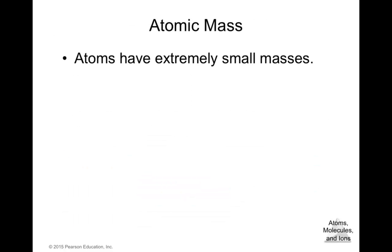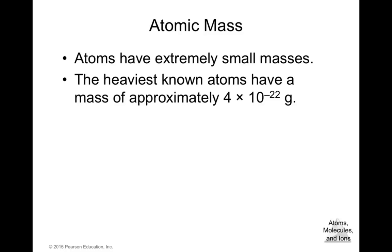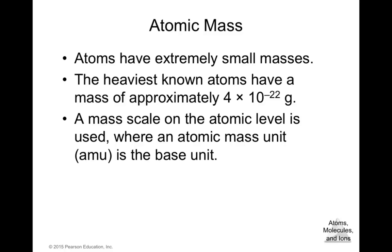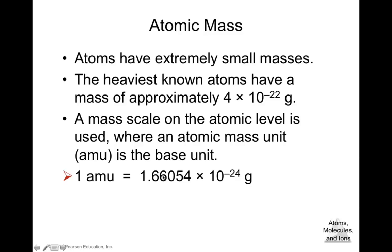Atoms have extremely small masses, which depend on the number of neutrons and protons. The heaviest known atoms have a mass of approximately 4 × 10⁻²² grams. A mass scale at the atomic level uses the atomic mass unit (AMU) as the base unit: 1 AMU = 1.66054 × 10⁻²⁴ grams. This is essentially a conversion factor for atomic mass.